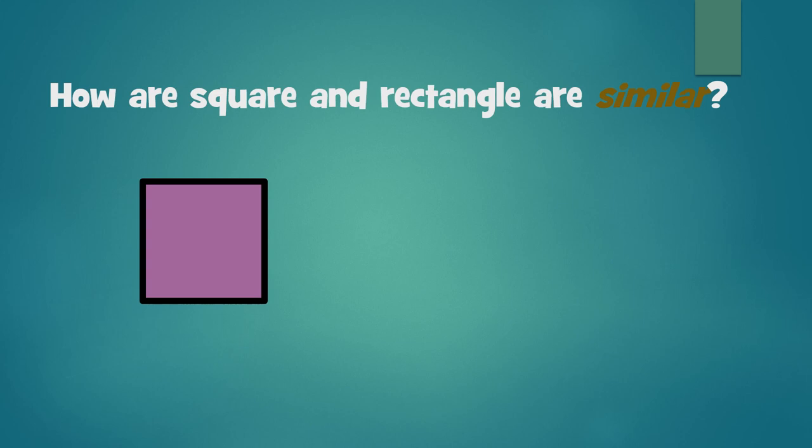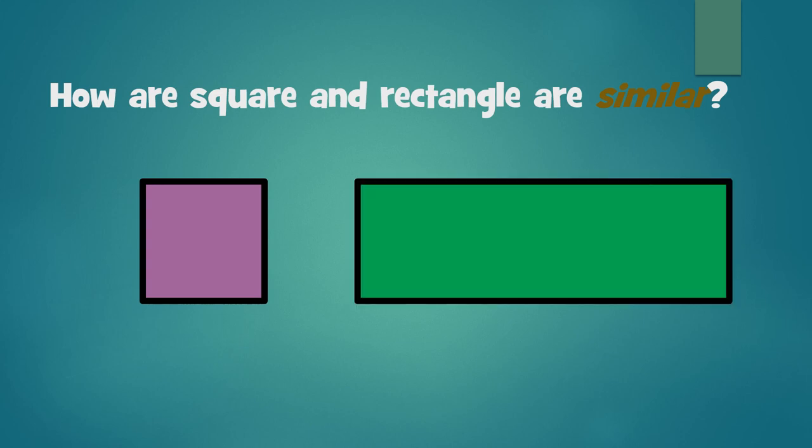Now, we're going to talk about how a square and a rectangle are similar. On the left side is a square shape. On the right side is a rectangle shape. A square has one, two, three, four corners. So, it has four corners.